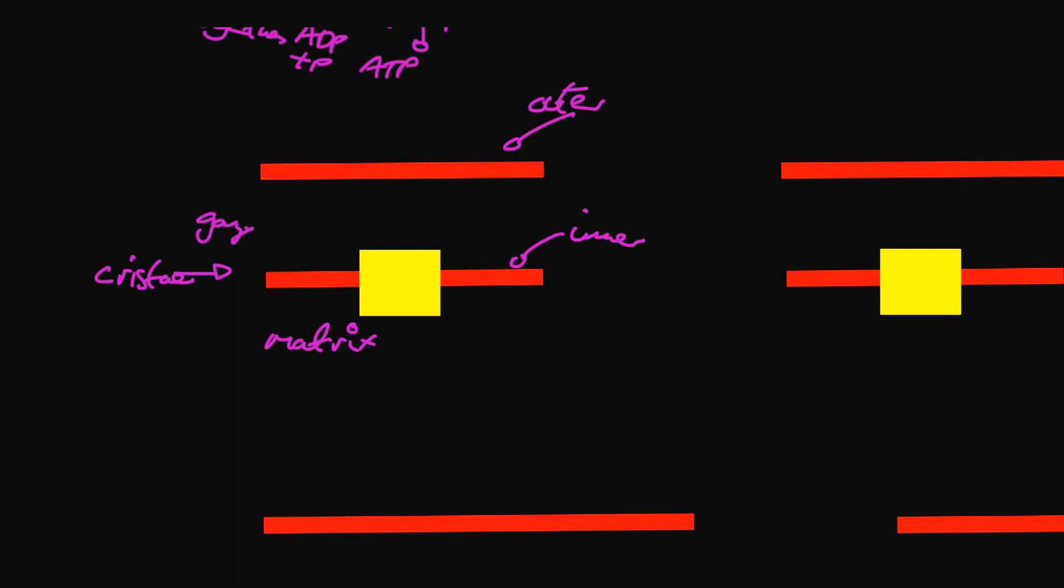In a chloroplast you have the stroma, which is the cytoplasm of the chloroplast, and then you have a thylakoid membrane. Both of these are phospholipid bilayers so they prevent the flow of protons. The protons are inside the thylakoid interior and they flow out through ATP synthase.